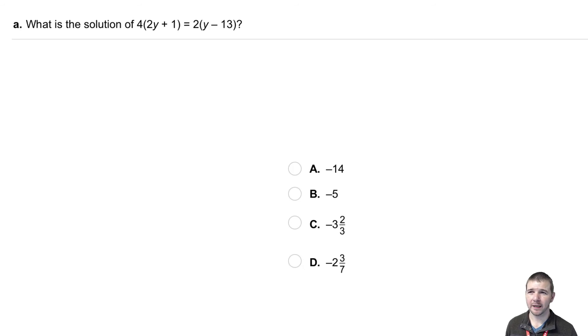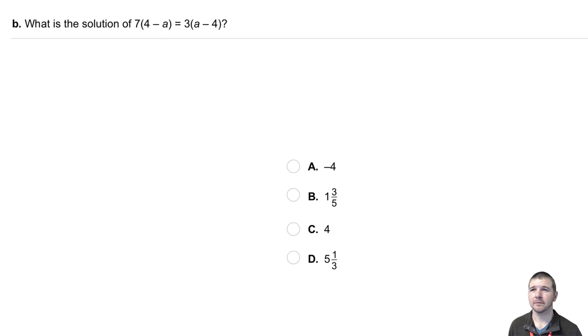Your turn. Part A: What is the solution of 4(2y + 1) = 2(y - 13)? Part B: What is the solution of 7(4 - a) = 3(a - 4)?